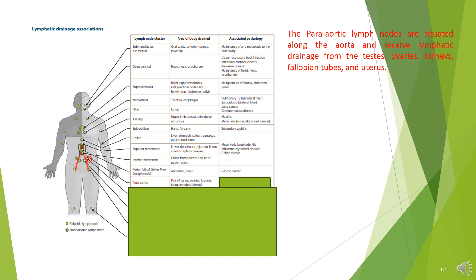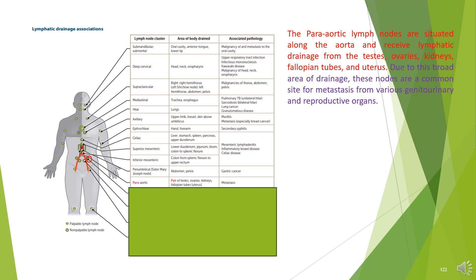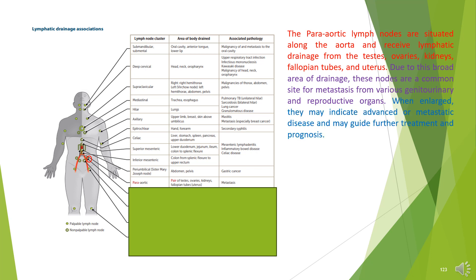Para-aortic lymph nodes. The para-aortic lymph nodes are situated along the aorta and receive lymphatic drainage from the testes, ovaries, kidneys, fallopian tubes, and uterus. Due to this broad area of drainage, these nodes are a common site for metastasis from various genitourinary and reproductive organs. When enlarged, they may indicate advanced or metastatic disease.